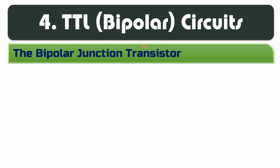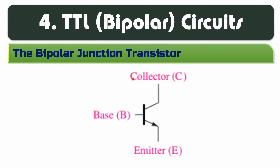We will talk about TTL circuits and the Bipolar Junction Transistor with its three terminals. There are three terminals: Base, Collector, and Emitter Junction. The BJT has a Base-Emitter junction and a Base-Collector junction.